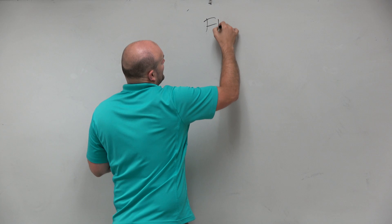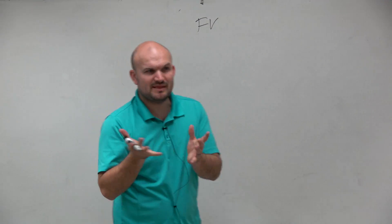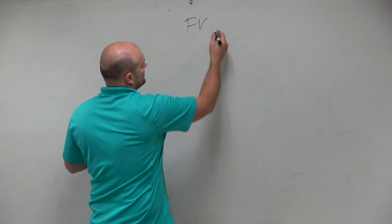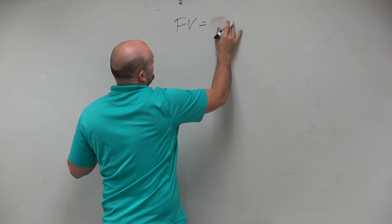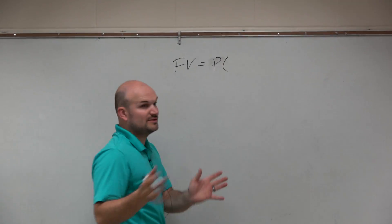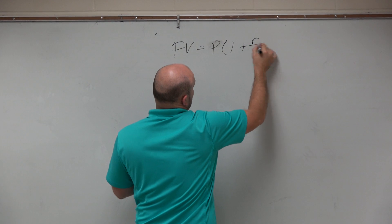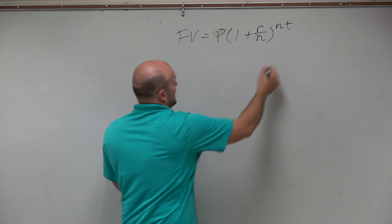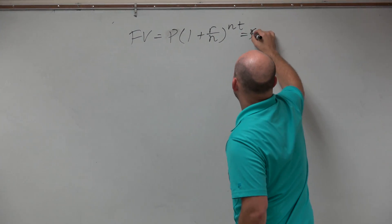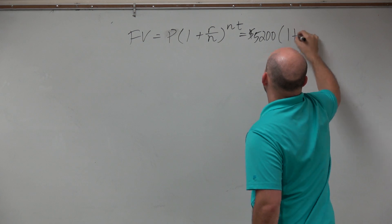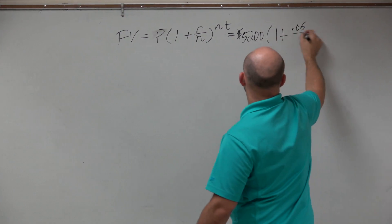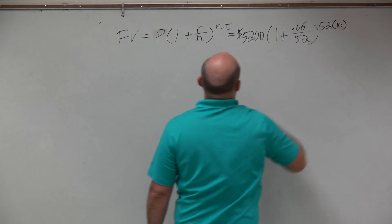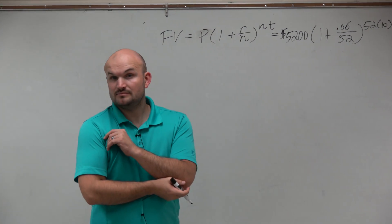Then the next thing we talked about was what if we just took $5,200—that's $10 a week for a whole year for 10 years. What if we just took that amount of money and put it into an account and forgot about it, earning a certain interest rate compounded a certain amount of times. The amount of money we invested was $5,200. The interest rate we are going to hypothetically earn was 6%, compounded 52 times a year, and the number of years was 10.